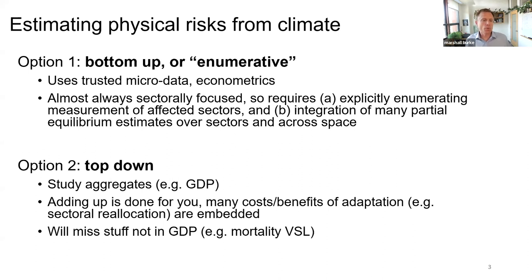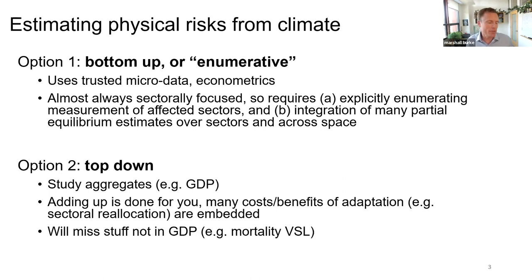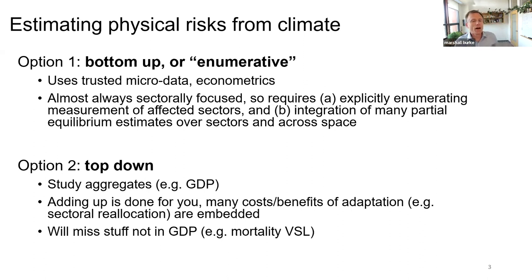The opposite approach — and what I'll walk you through today — is the top-down approach. Instead of enumerating impact sector by sector and adding them up, we let the economy add things up for us and study the aggregate output, looking at something like GDP. What's nice is the adding up is done for you, and at least some costs and benefits of adaptive measures like sector reallocation are embedded in these measures.